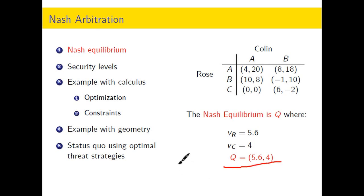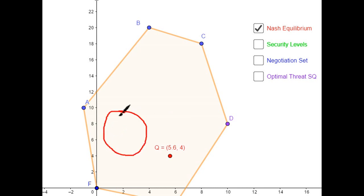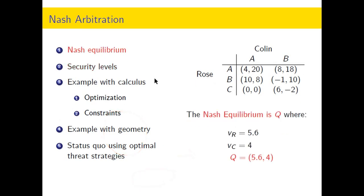The Nash equilibrium is the point Q = (5.6, 4). Looking at the payoff polygon, you can see that the Nash equilibrium favors Rose quite a bit. There is a large area that Colin may be able to use to threaten her, but there's less area down here that Colin can be threatened with and a bigger threat area over here. Initially it seems this favors Rose, since she's closer to most of the Pareto optimal boundary than Colin is. That concludes part one; we'll look at security levels in part two.